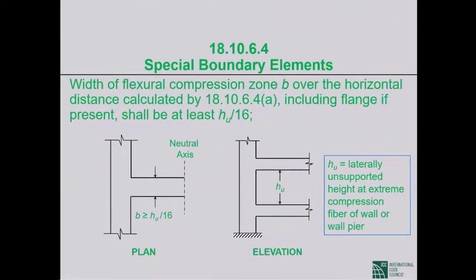ACI 318-14 has brought back a minimum thickness requirement for concern about out-of-plane buckling of shear walls — something that had been in UBC 94 and 97 but was dropped in ACI 318-99. Out-of-plane buckling had never been observed outside of the lab until the 2010 Chile earthquake and the 2011 Christchurch, New Zealand earthquakes, where actual shear wall out-of-plane buckling was observed.